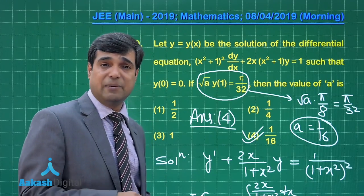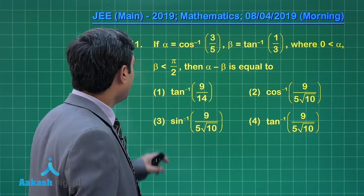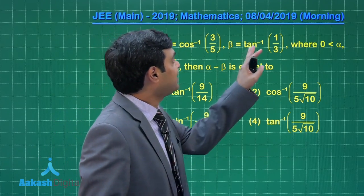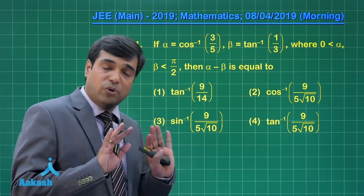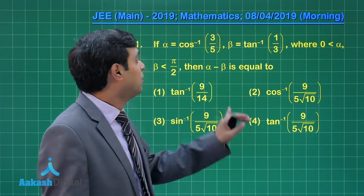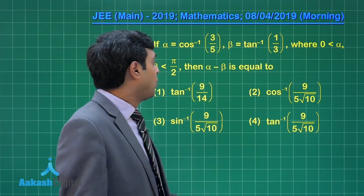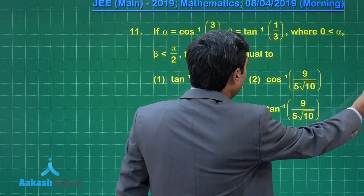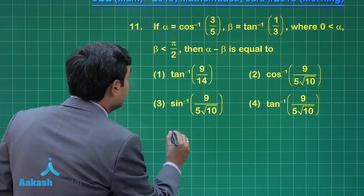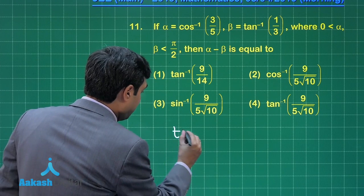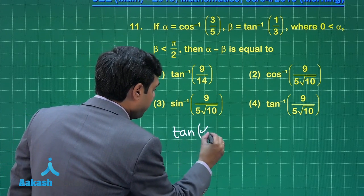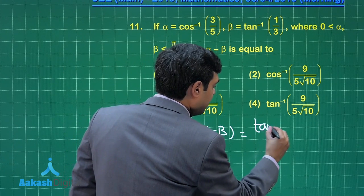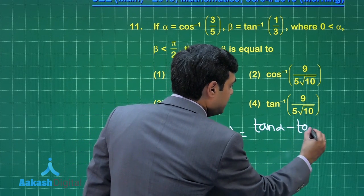Question 11: If α = cos⁻¹(3/5) and β = tan⁻¹(1/3), where α and β are both between 0 and π/2, find α − β. We'll work with the tan of (α − β).